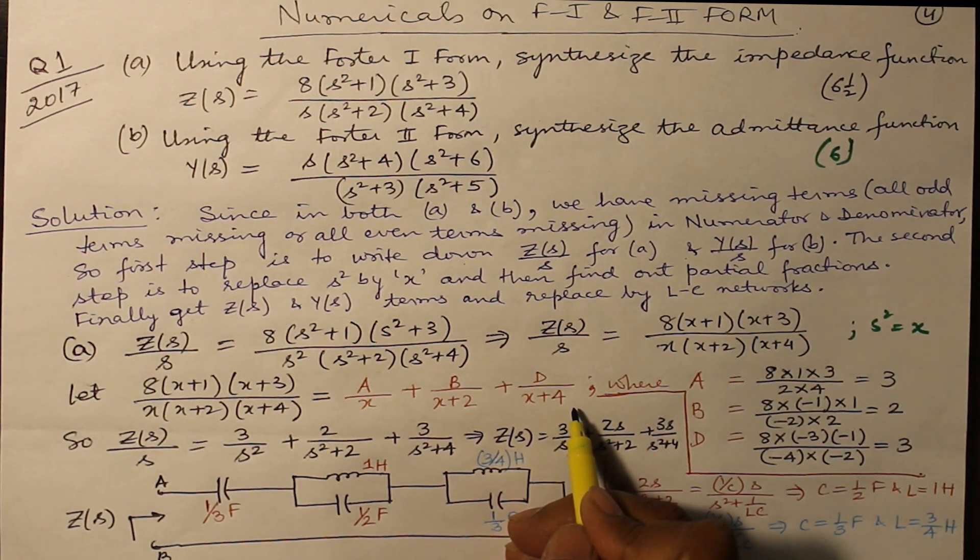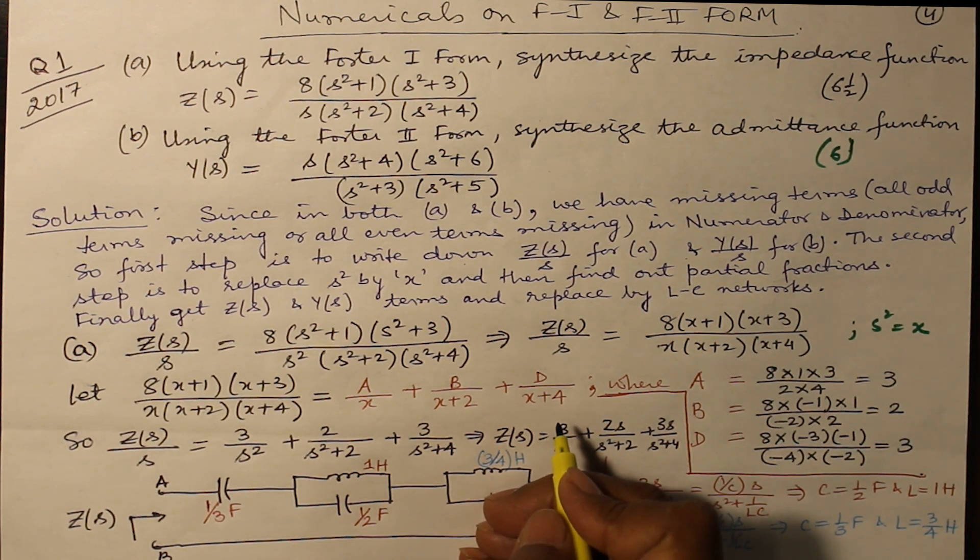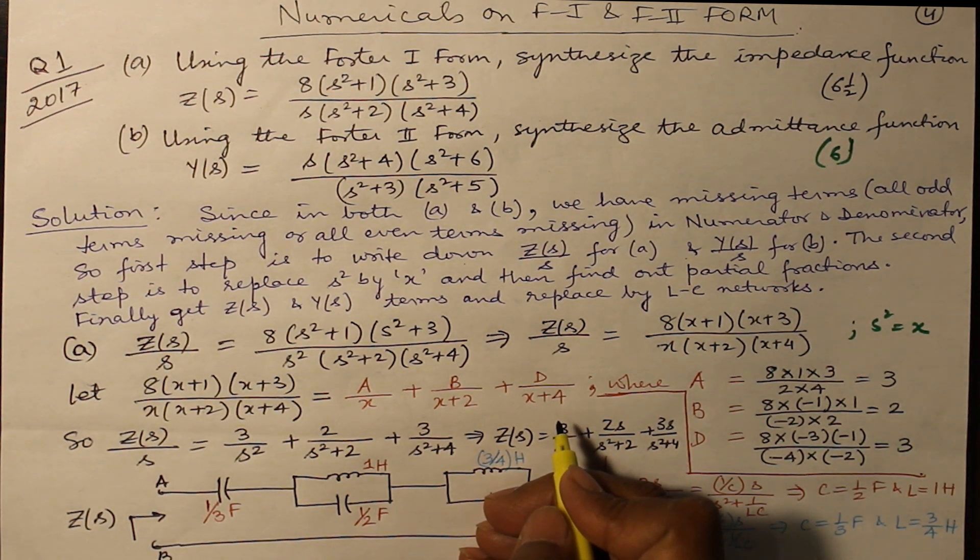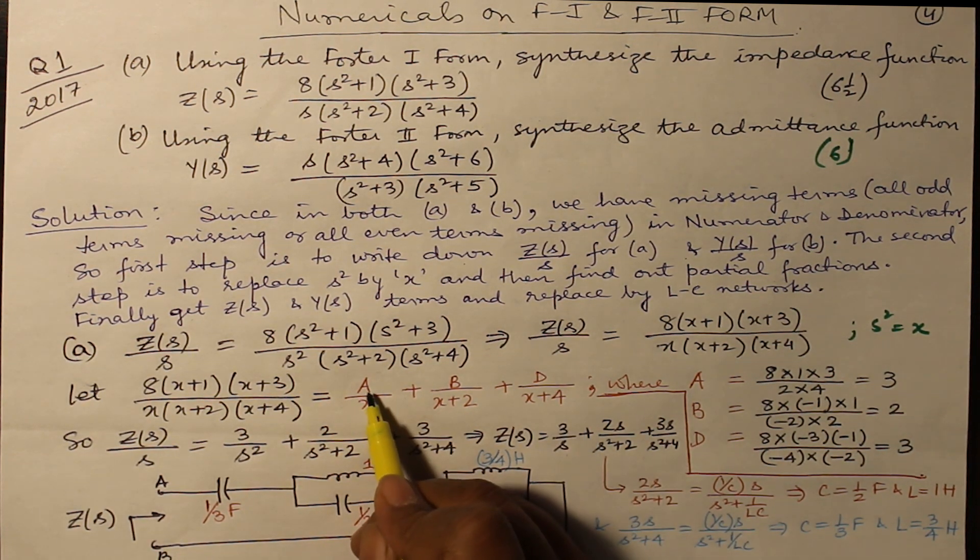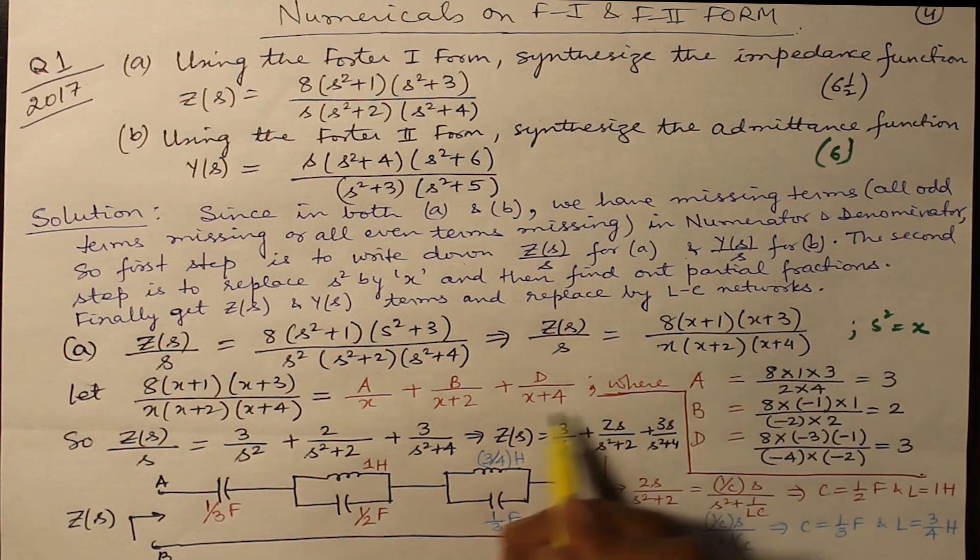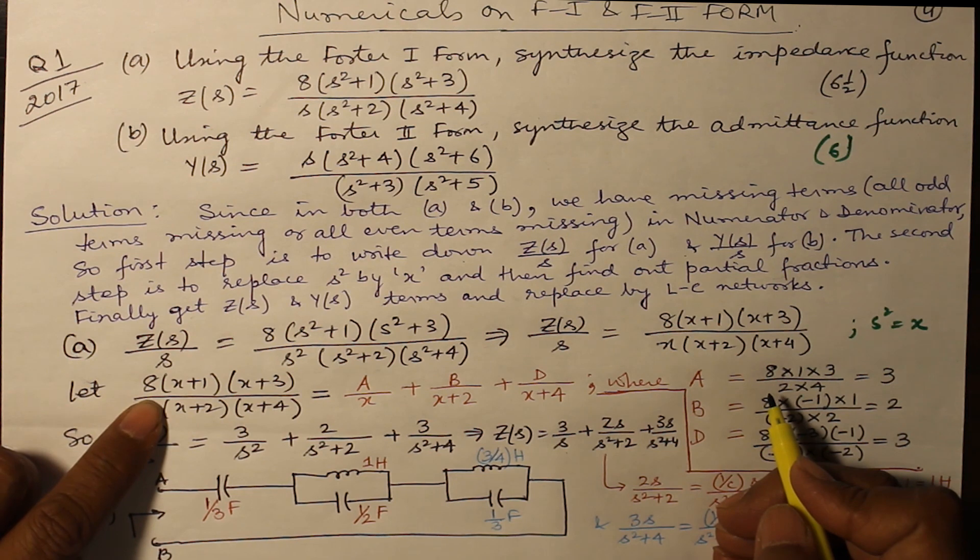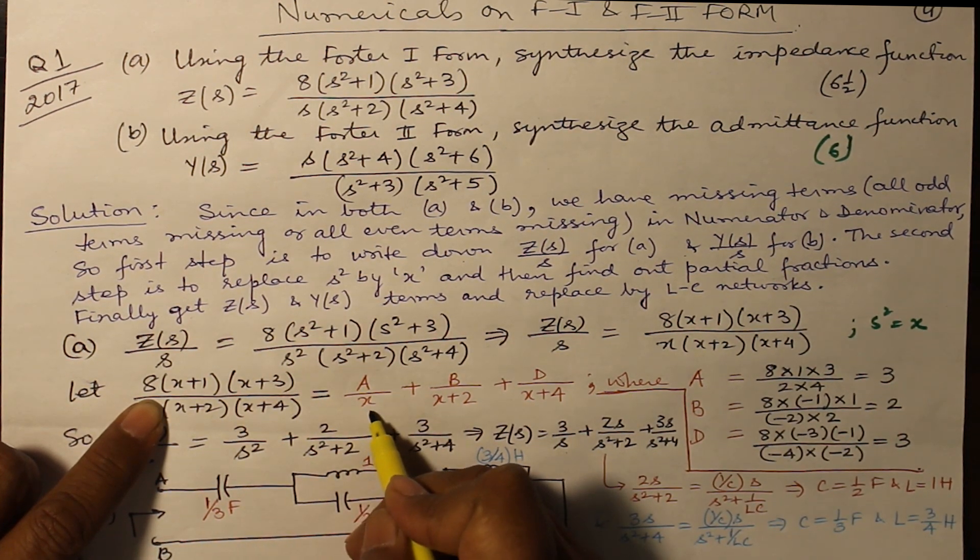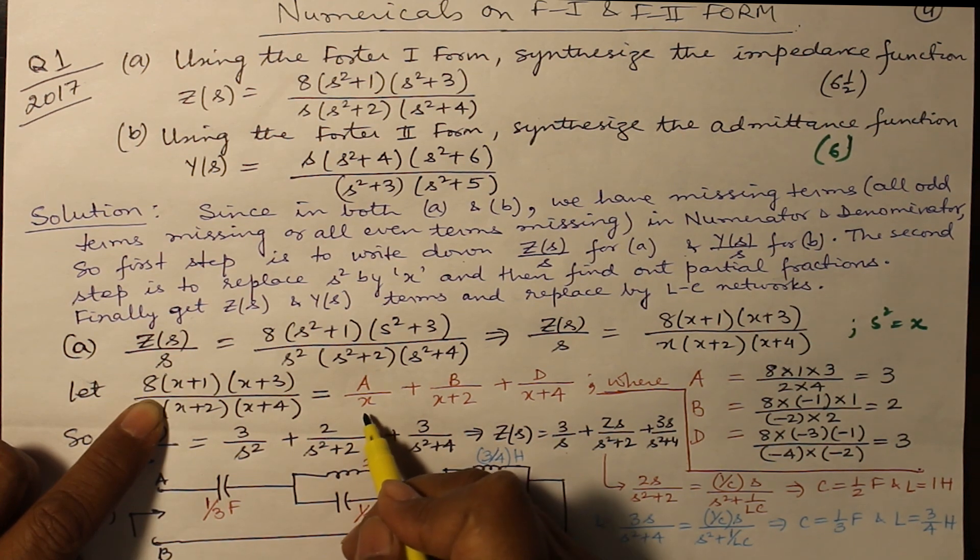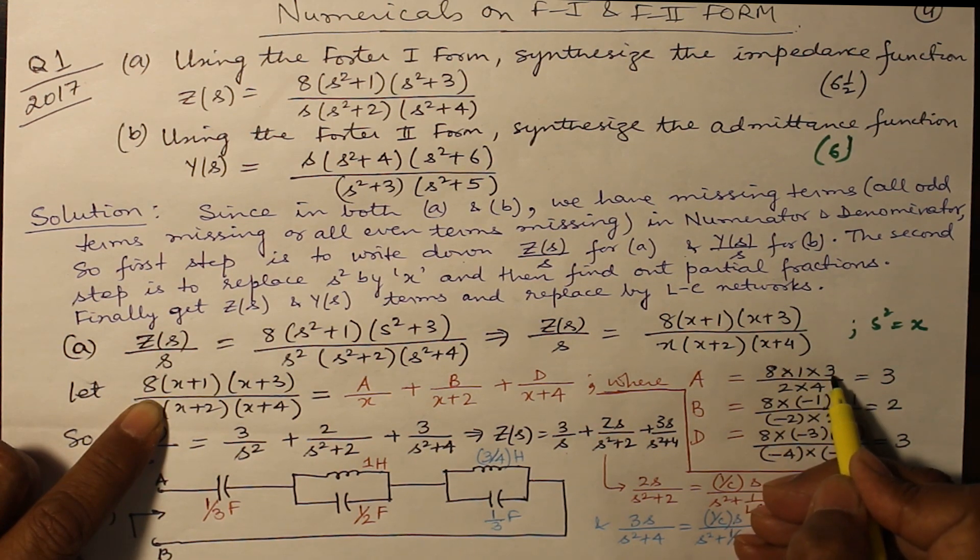Now the question can come into your mind, why not c? C has been reserved for the use as capacitance. So always in the video I will be posting a, b, d, e and so on. So a/x - you want to find out a. Put your left finger on x because a is corresponding to x, and then put x equals 0 here. So 8×1×3 divided by 2×4, that gives you 3.